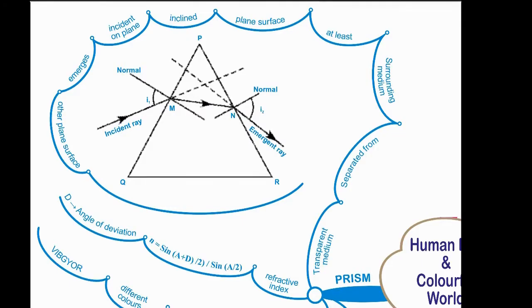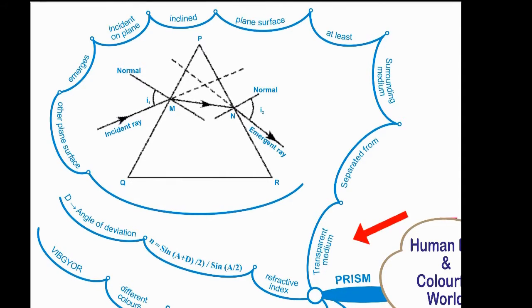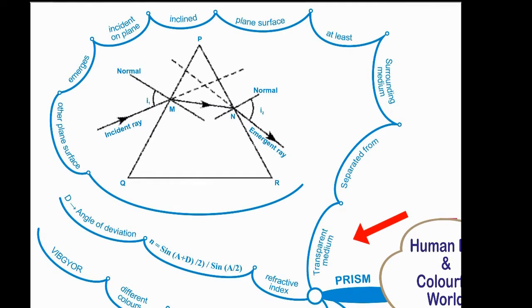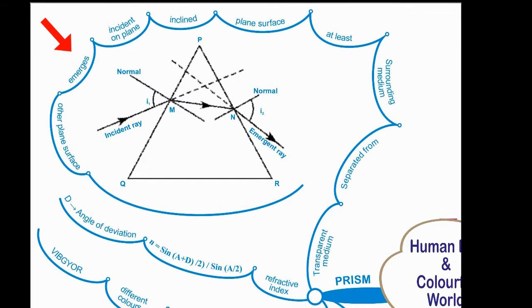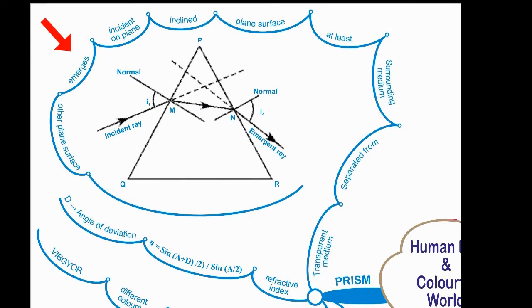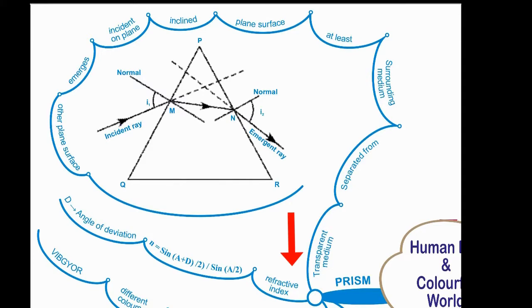The keywords used in prism are: transparent medium separated from surrounding medium, at least two plane surfaces inclined, incident on plane, emerges other plane surface. A figure shows refractive index n is equal to sine of (A plus D) by 2, by sine of A by 2.